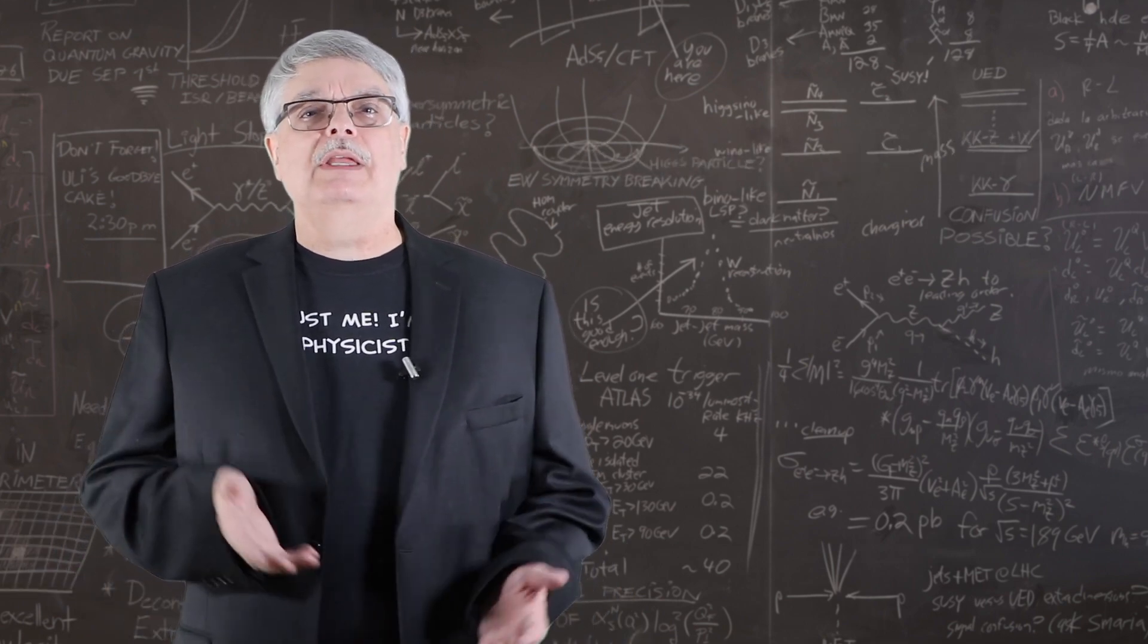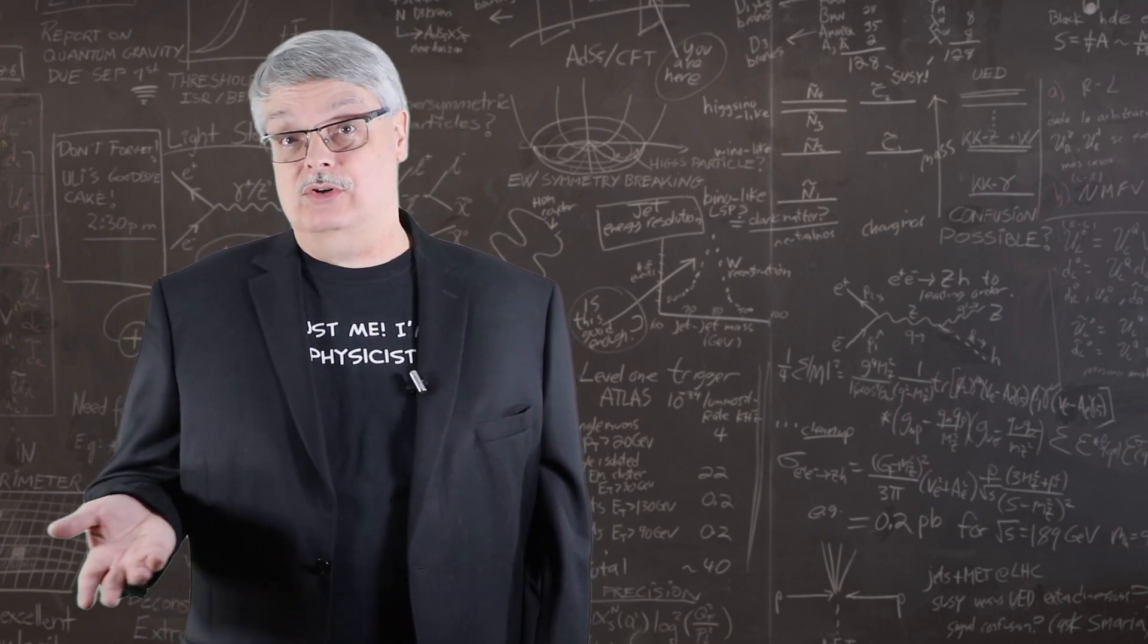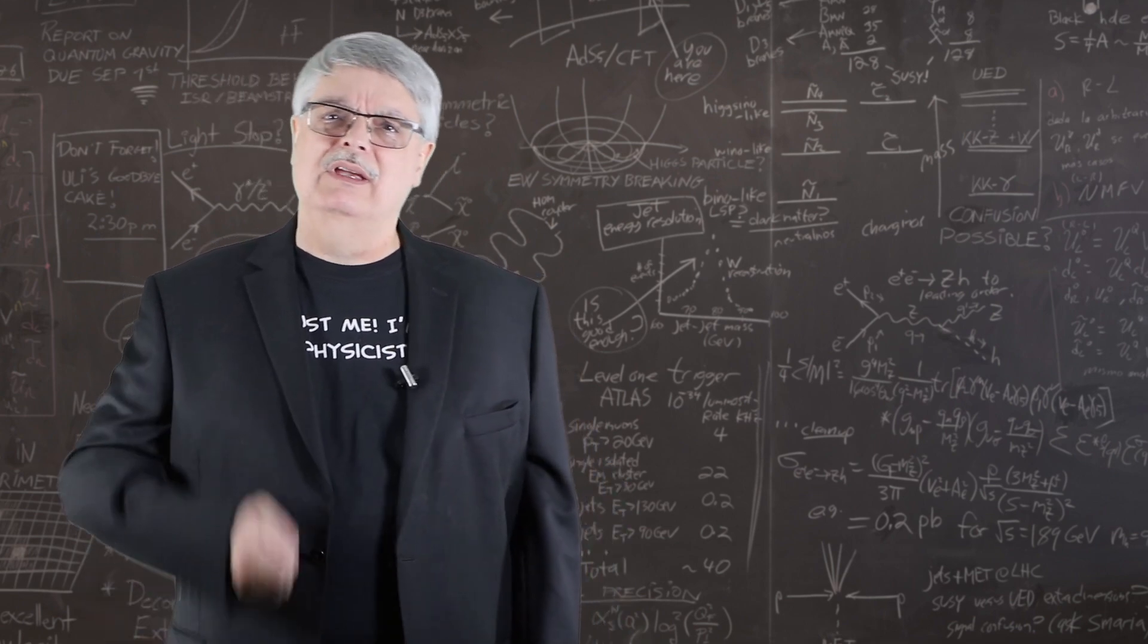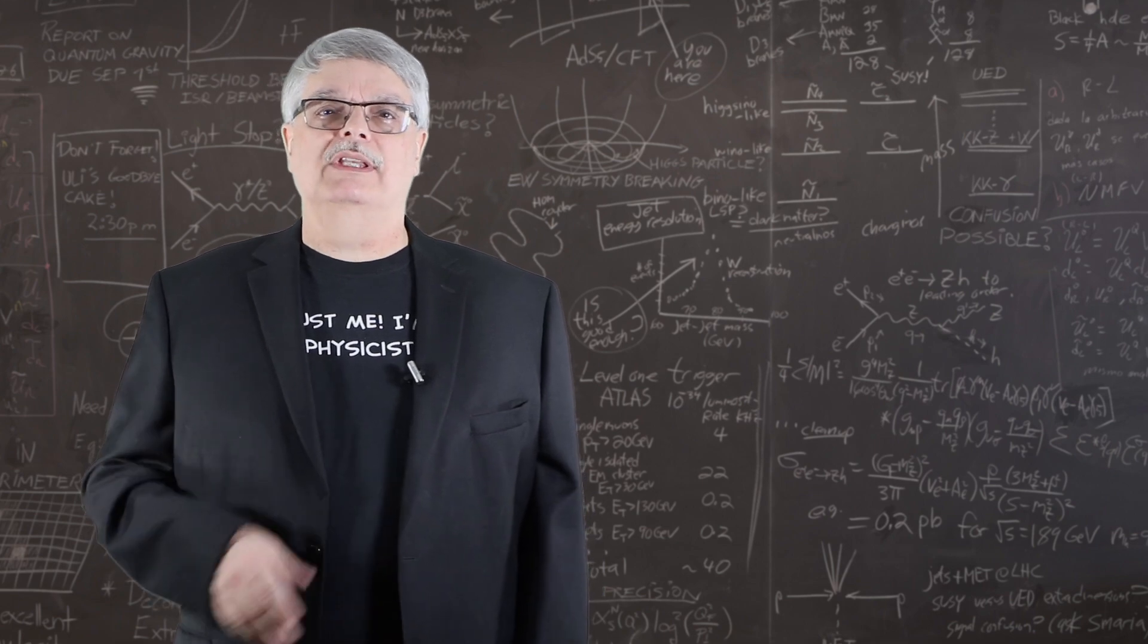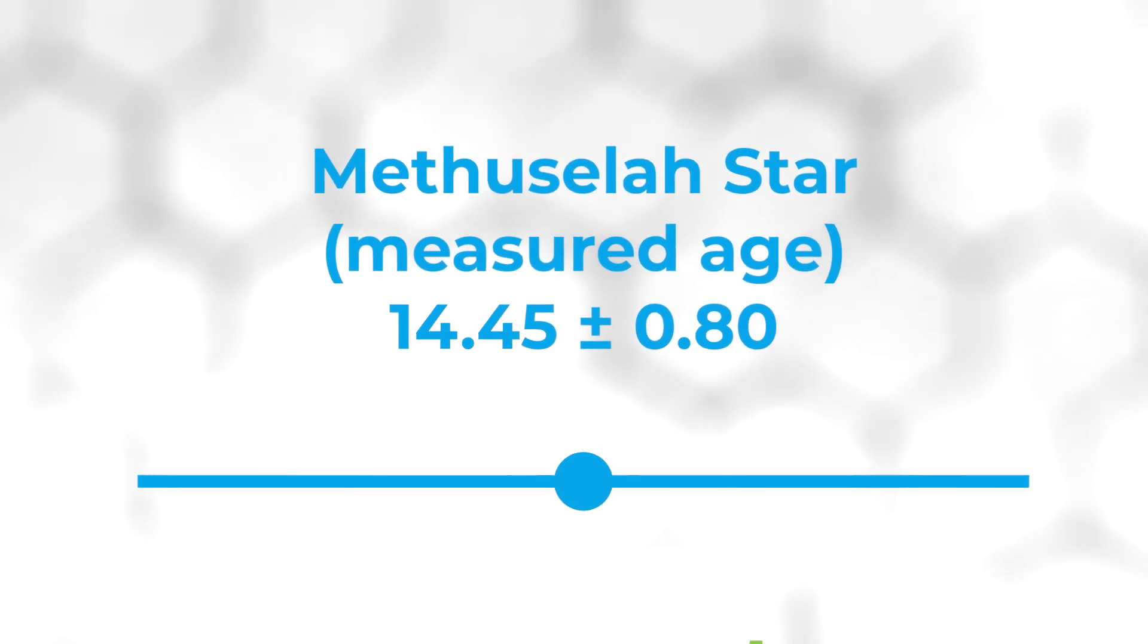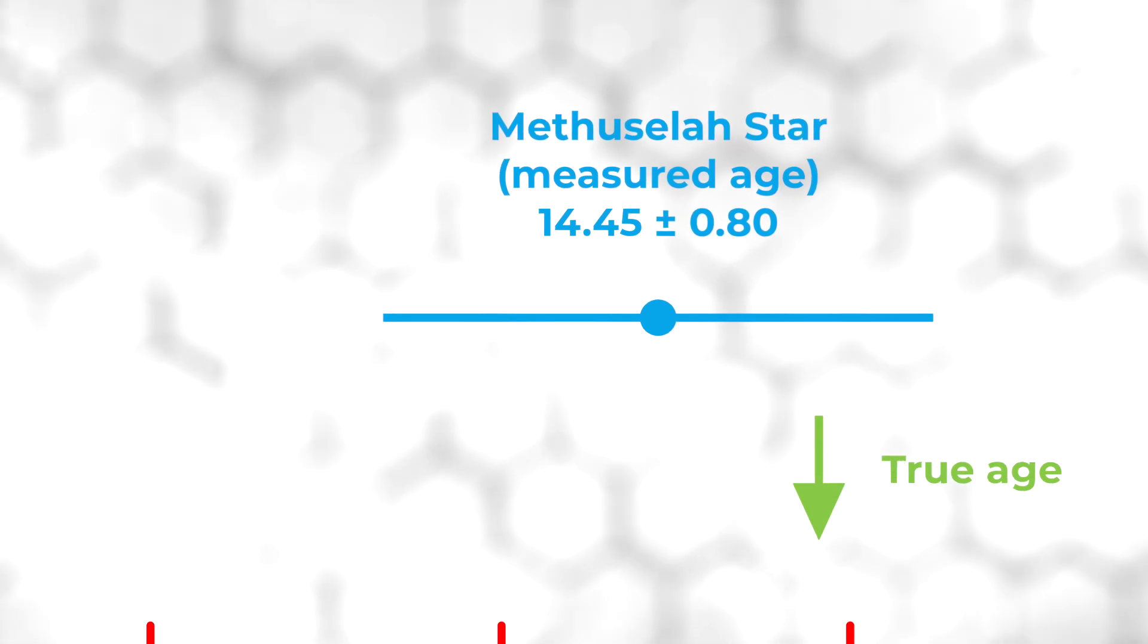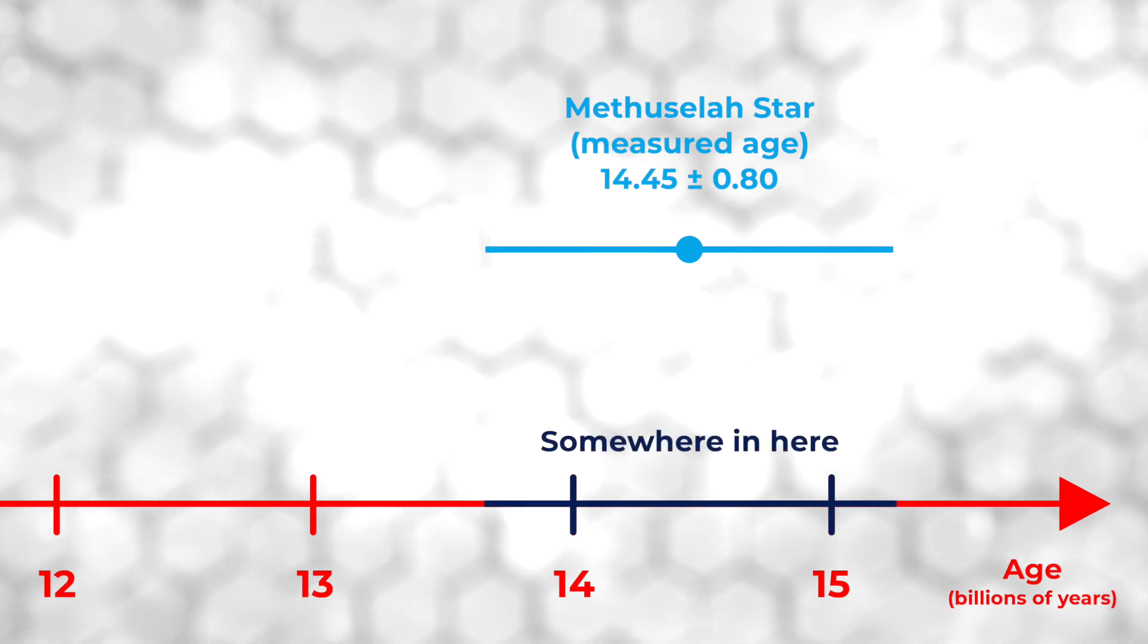However, the people who do that seem to have a misunderstanding about data and, most importantly, uncertainties. Let's unpack both of those factors. When you measure something, you never know the true value. Your measurement is just an estimate of the true answer. So let's take the age estimate of the Methuselah star of 14.45 plus or minus 0.8 billion years. We don't know the true age of the star, we just know that it's in the neighborhood of 14.45 billion years. And those uncertainties are important, too.